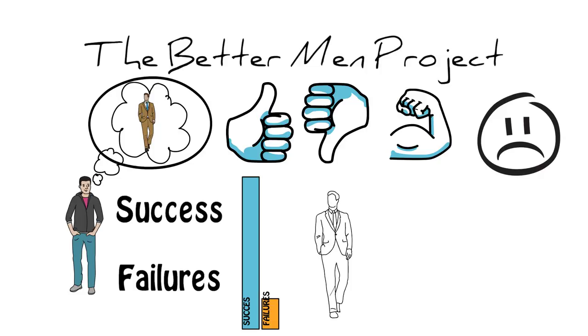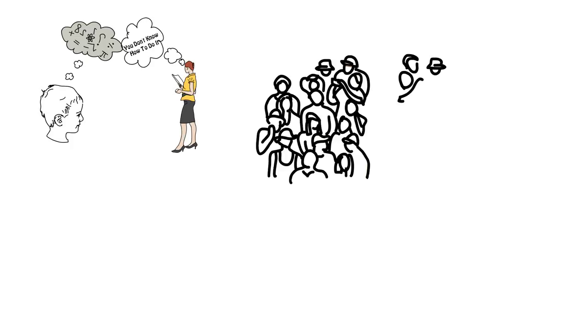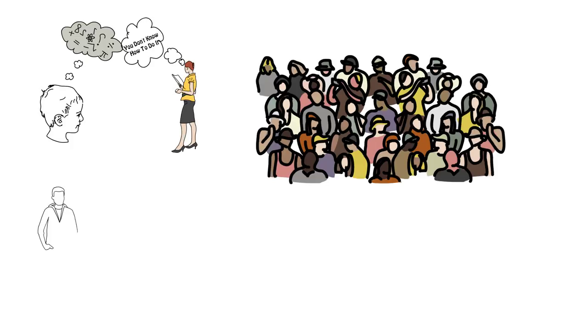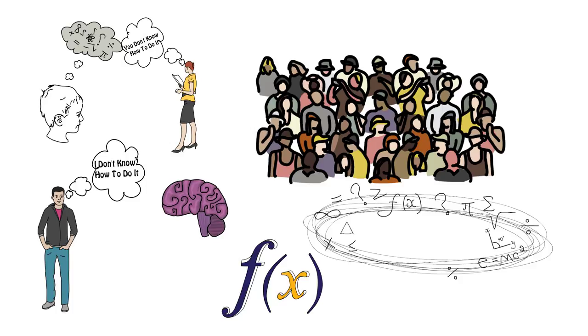For the most part, the image that we have of ourselves comes from a set of experiences throughout our life. For example, if you struggled at a math problem as a kid and your teacher told you that you were bad at math and then the rest of the class treated you the same way, you might have grown up believing that you were bad at math, even though you were more than capable of solving the problems. And realistically speaking, most people get stuck at math problems from time to time.